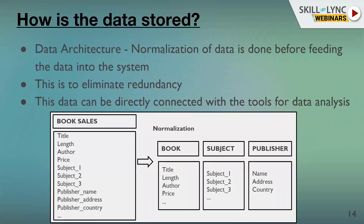Before storing data, we structure it. This structuring process or data manipulation is called normalization. The goal of normalization is to reduce and even eliminate data redundancy — that is, storing the same piece of data more than once, like duplicates. Removing duplicates leads to increased consistency and more accurate data, as the database stores information in only one place.